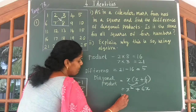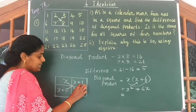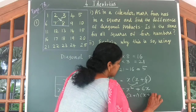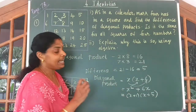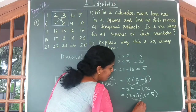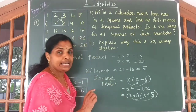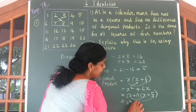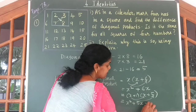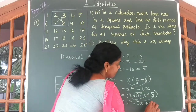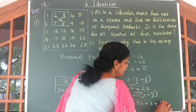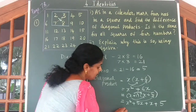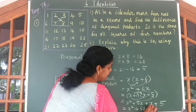Second diagonal product: we have to multiply x plus 1 with x plus 5. Use our second identity — x is multiplied with both numbers, and then 1 is multiplied with these 2 numbers. So you get x into x: x squared, plus x into 5: 5x, plus 1 into x: 1x, plus 1 into 5: 5. Now 5x can be added to x, so here you get x squared plus 6x plus 5.